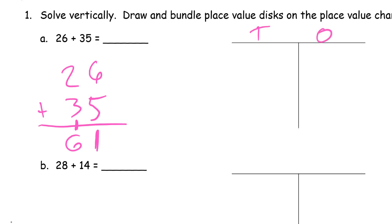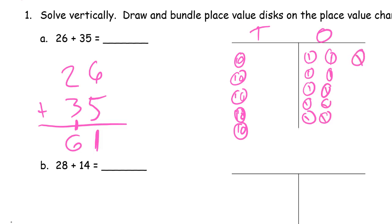10s and 1s. 26 is 2 10s and 2, 3, 4, 5, 6 1s. And then 35 is 1, 2, 3 10s and 1, 2, 3, 4, 5 more 1s. Bundle these to make another 10. And we're not going to count those twice, so we have 6 10s and a 1, 61.